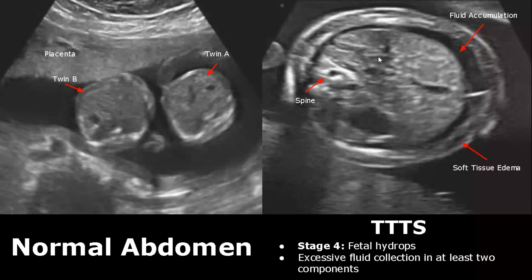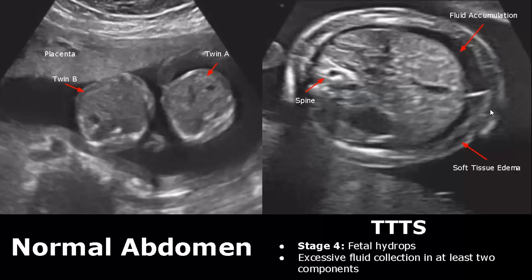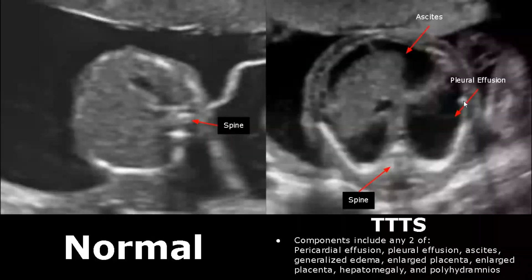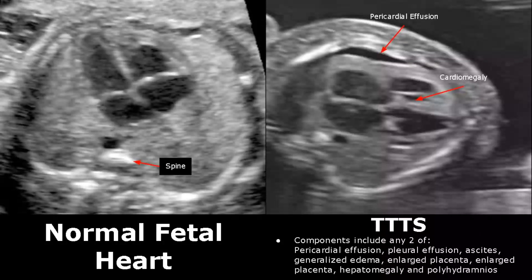Fetal hydrops is the fourth stage of twin-to-twin transfusion syndrome. Excessive fluid collection will be found in at least two components, including pericardial effusion, pleural effusion, ascites, generalized edema, enlarged placenta, hepatomegaly, and polyhydramnios. Skin edema causes skin thickening. Here we see ascites and soft tissue edema, as well as pleural effusion. It usually occurs in the recipient twin. Here we also have pericardial effusion and cardiomegaly — an enlarged heart with accumulation of pericardial fluid.